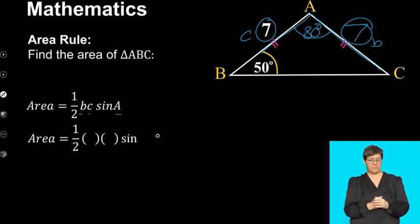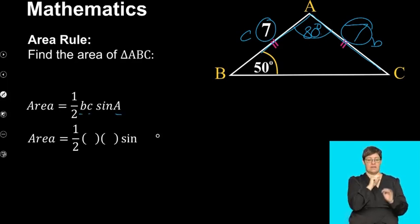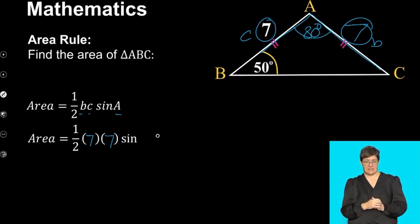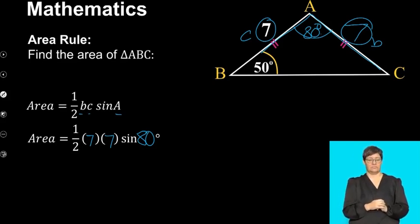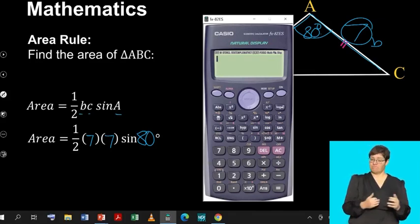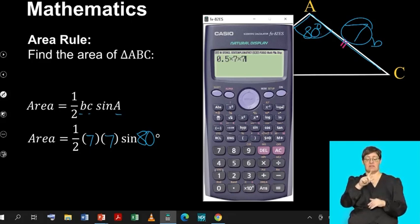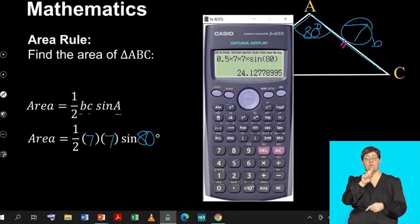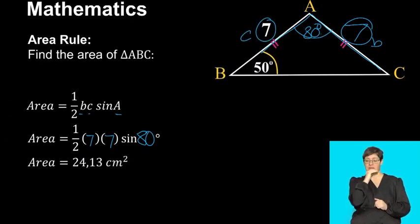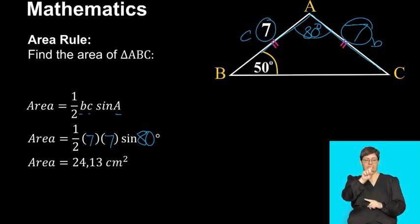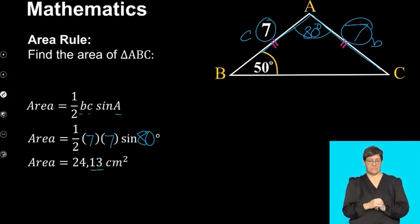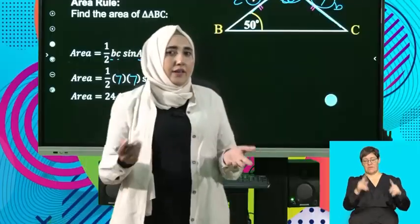Let's substitute the values in. Our value for B is 7, our value for side C is 7, and our angle A is 80 degrees. So what's left to do now is put this into the calculator: 0.5 times 7 times 7 times sine of 80 degrees. We're going to get an answer of 24.1277, which we round off to two decimal places, giving us an area of 24.13. That was pretty simple.